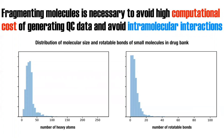You also want to minimize the number of rotatable bonds to avoid an explosion of torsions to drive. Another reason for keeping fragments small is that currently in the force field, the torsion parameters do not incorporate correlations between different torsions. You want to isolate the torsions and not convolute them with intramolecular interactions — the larger the molecule, the higher the probability of intramolecular interactions. Ideally you want the smallest fragment that still represents the chemistry of the parent molecule.